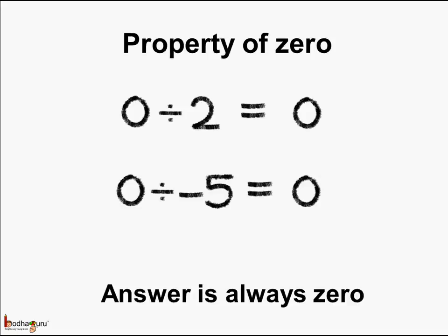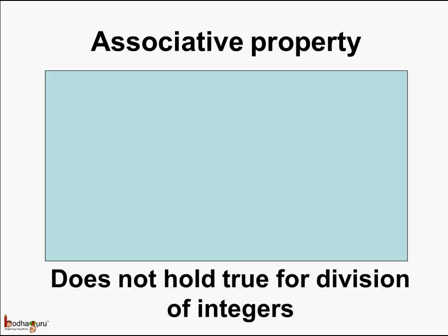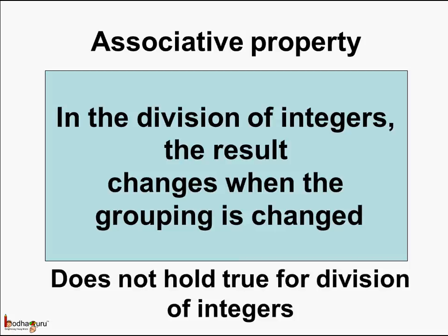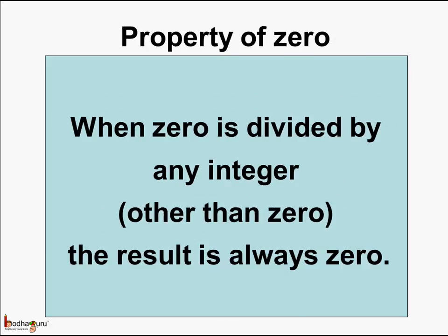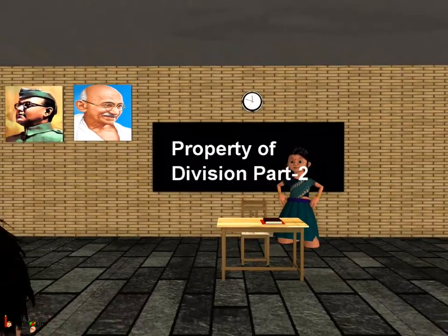So we see the answer is always 0 when we divide 0 by any non-zero integer. Let us revise what we learned today. First, the associative property does not hold true for division of integers — the result changes when the grouping is changed. Next, when 0 is divided by any integer other than 0, the result is always 0; hence 0 divided by 7 equals 0. Finally, any integer divided by 1 always gives the same integer; hence minus 7 divided by 1 equals minus 7. That was all about properties related to division of integers. Bye-bye, children.